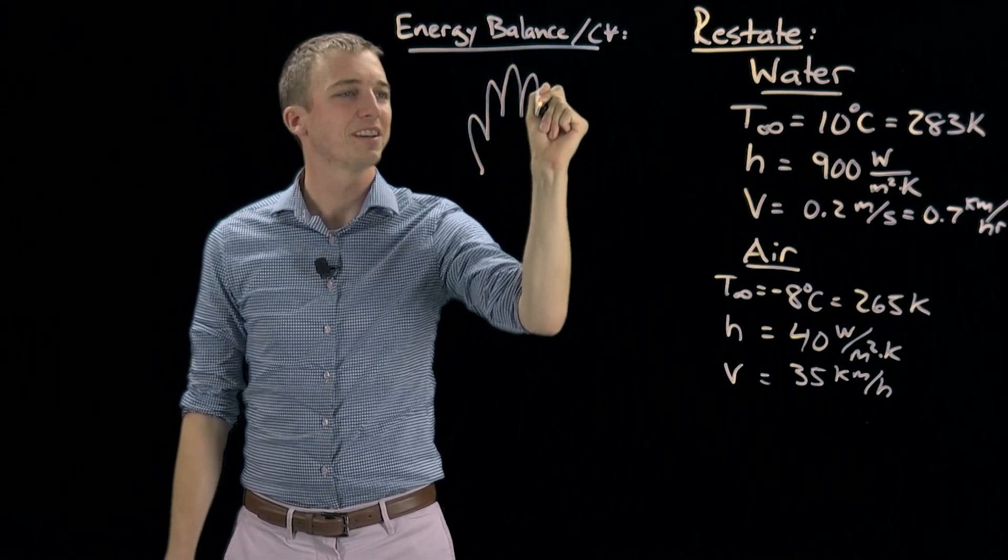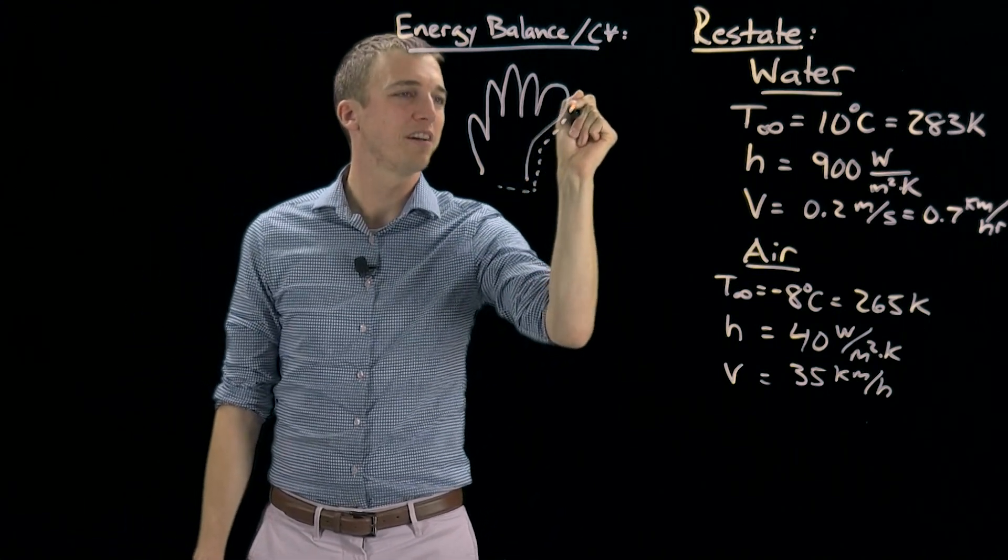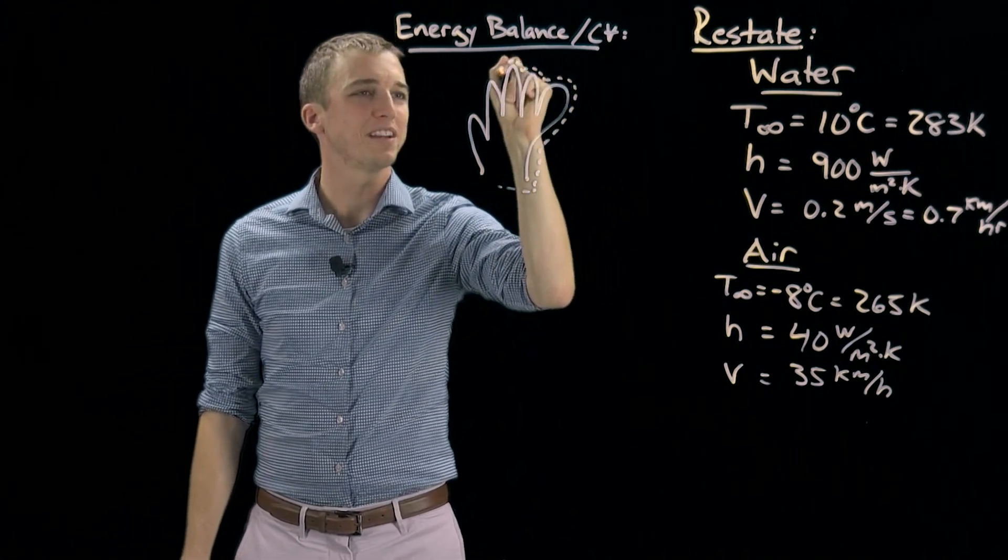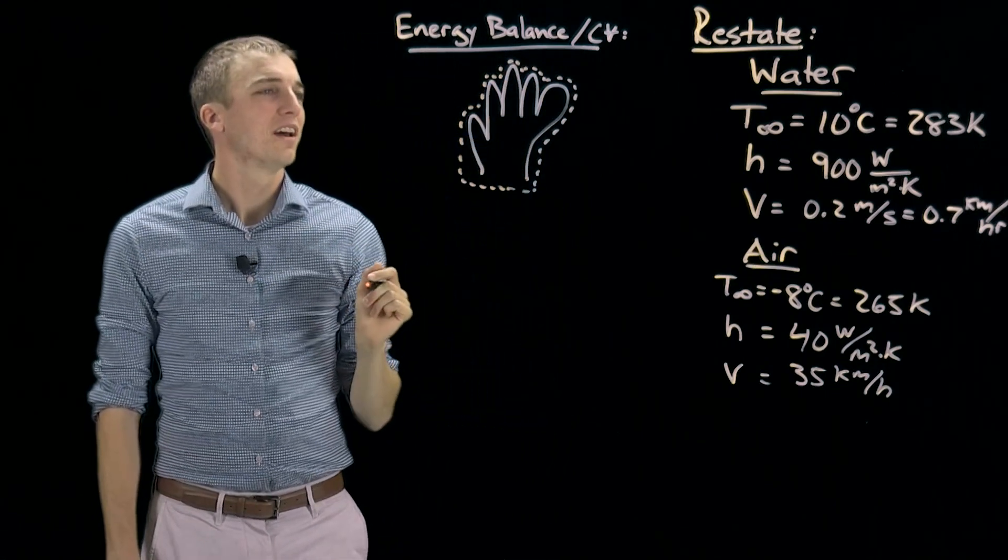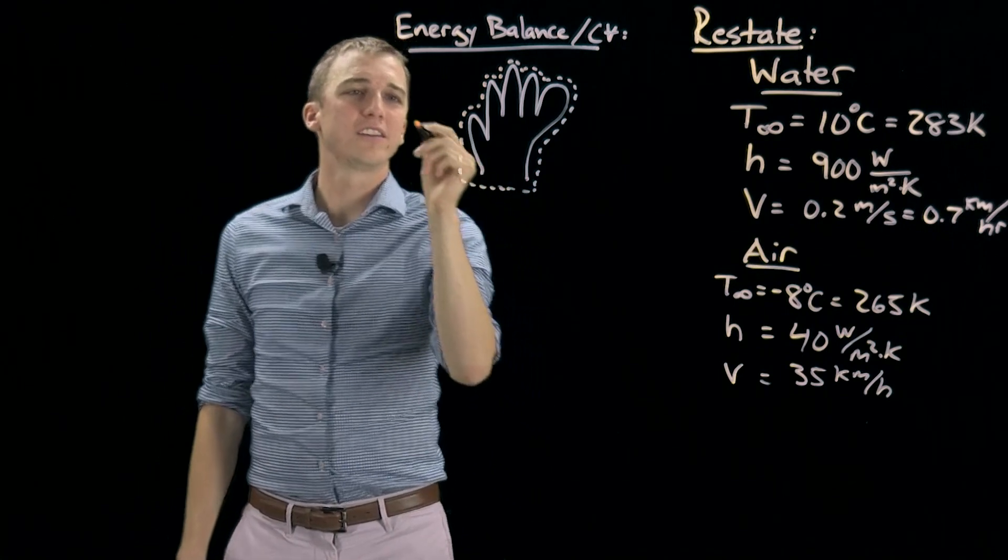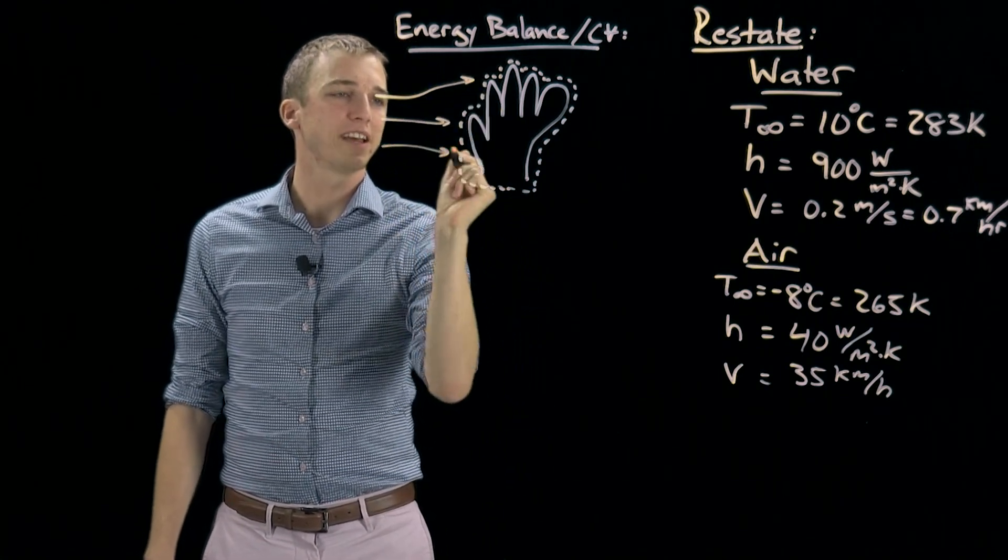And we will draw our control volume around that hand with a very big pinky. Now we are going to draw what's going on, which is there's fluid flowing over this hand.